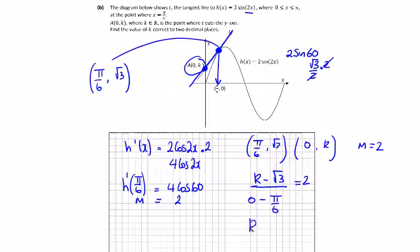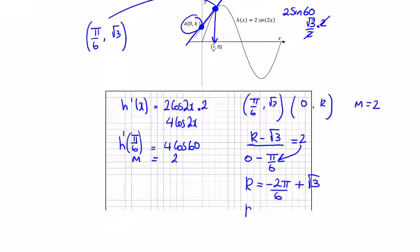So k is equal to twice minus pi over 6, this one times this one, and when minus root 3, we bring that across plus root 3.